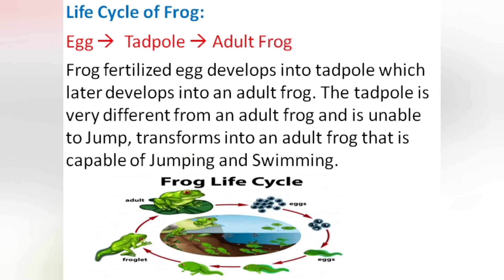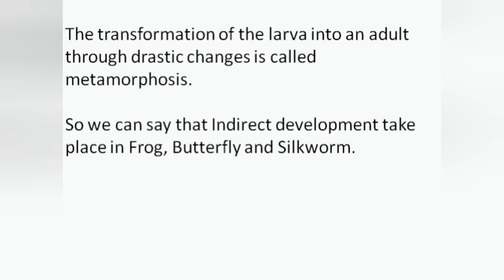In the same way, in a frog, the fertilized egg develops into a tadpole which later develops into an adult frog. The tadpole is very different from the adult frog and is unable to jump; it transforms into an adult frog capable of jumping and swimming. The life cycle of a frog: the female frog lays an egg, from the egg a tadpole forms, and from the tadpole after some time they convert into an adult frog. The transformation of the larva into an adult through drastic change is called metamorphosis. Indirect development takes place in frog, butterfly and silkworm.